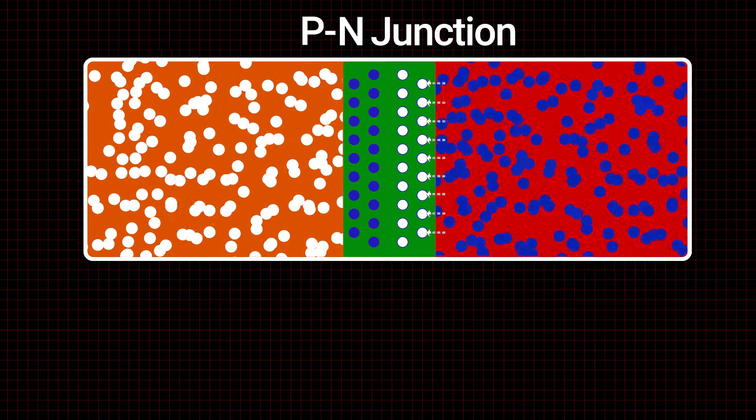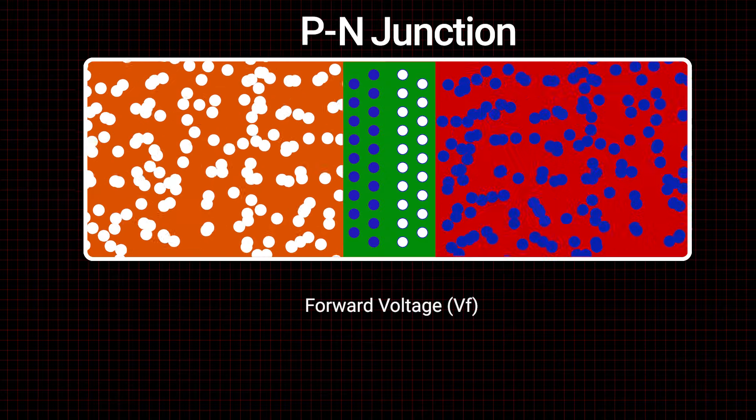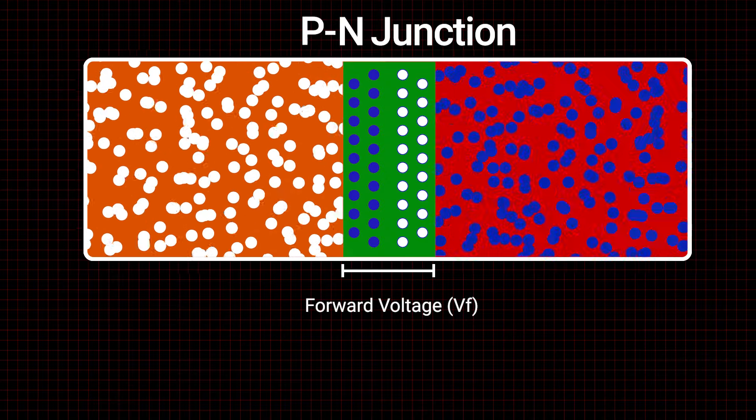The potential difference created in this region, often called forward voltage, in typical diodes is 0.7 volts.